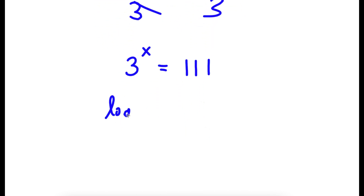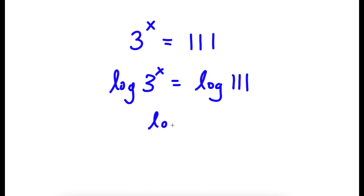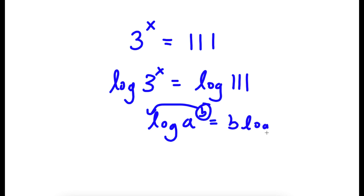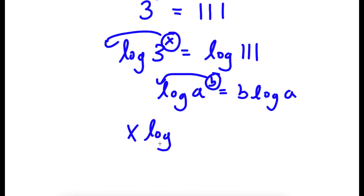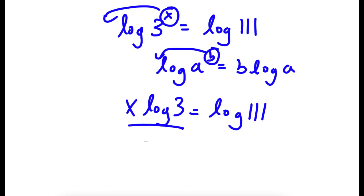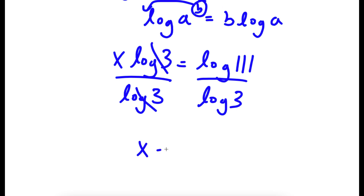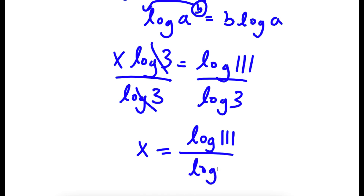Now if I take the log on both sides, I have log 3 to the power of x is equal to log 111. If I have something in the form log a to the power of b, I can move the exponent to the front, so this equals b times log a. So in this case, log 3 to the power of x — move x to the front — so I have x times log 3 is equal to log 111. Now if I divide both sides by log 3, these two cancel out, and I have x is equal to log 111 over log 3.